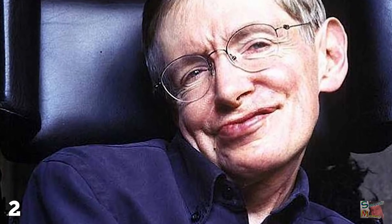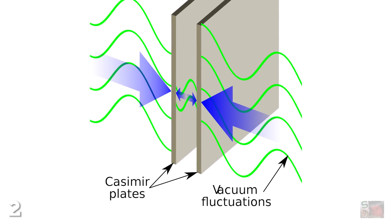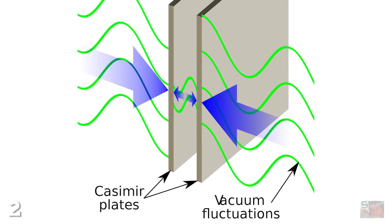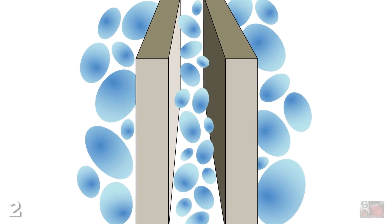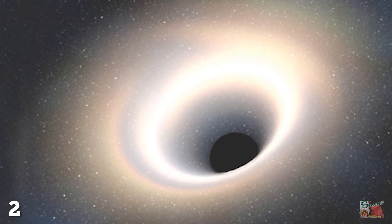Stephen Hawking believes we could use something called the Casimir effect to hold these tunnels open and stabilize them. But even if this proves possible, we still don't know if wormholes exist naturally at all.